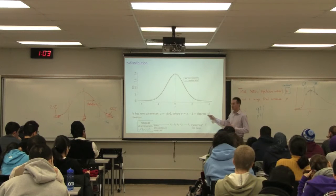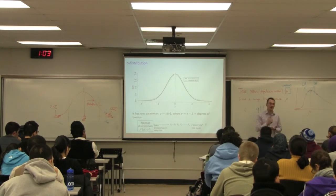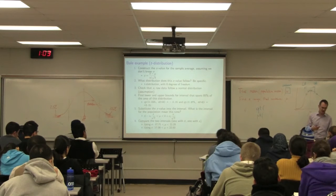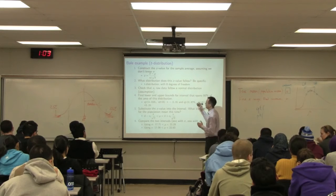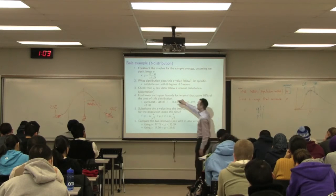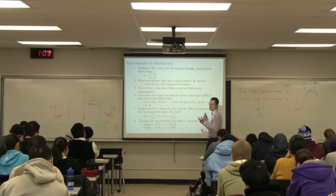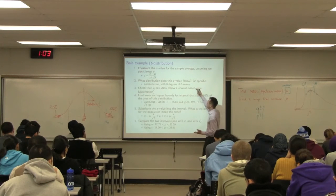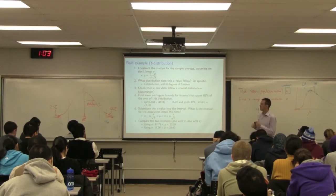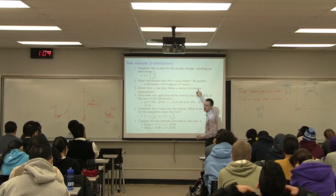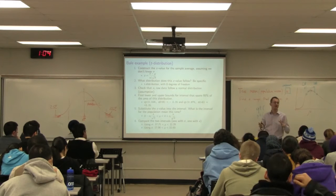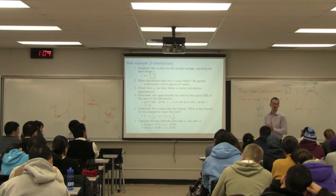I strongly recommend you prove to yourself that with a large sample size — 15 data points — you can't see much difference between the bounds. Now, what is the construction for when I don't know the sample variance? We still calculate z in the usual way — x-bar minus mu divided by s over root n — but this now comes from the t-distribution, specifically with n minus 1 degrees of freedom. Check that your raw data follow a normal distribution; using the car library you can plot a QQ plot to quickly verify this.